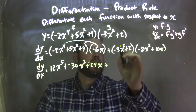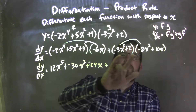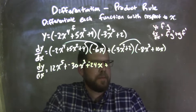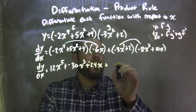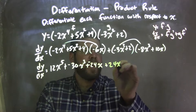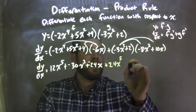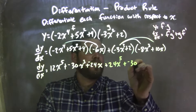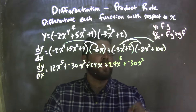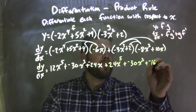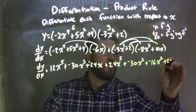Now let's distribute the second part. Remember, there are two parts for each one, so we have to make sure we get all of them. Negative 3x squared times negative 8x to the 3rd is a positive 24x to the 5th. Negative 3x squared times 10x is negative 30x to the 3rd. Two times negative 8x to the 3rd is negative 16x to the 3rd. And two times 10x is a positive 20x.